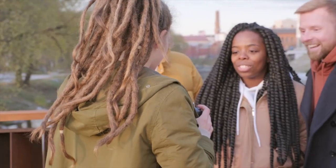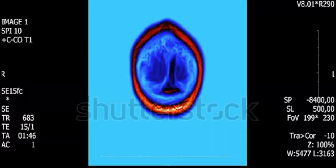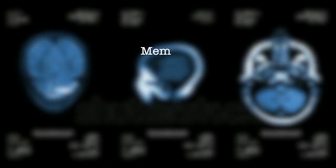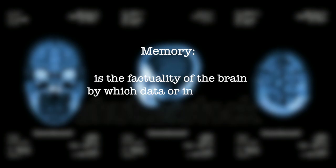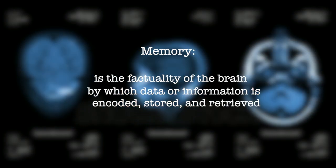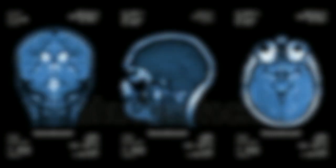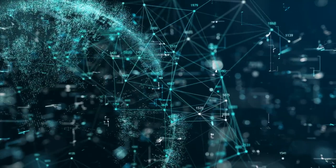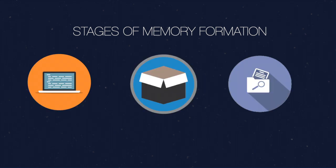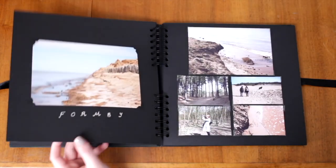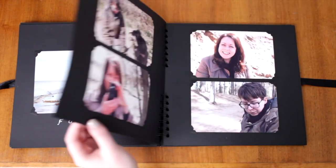The memories we remember are actually information stored in our brains. Memory is the faculty of the brain by which data or information is encoded, stored, and retrieved when needed. The bits of information that have been stored are formed through a three-stage process which starts with encoding. Memories are mental records of events.